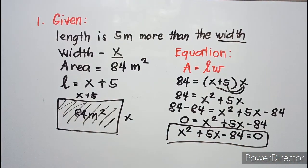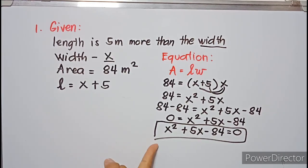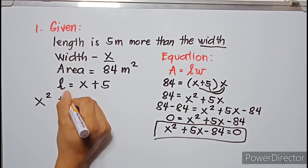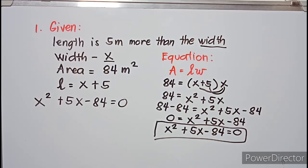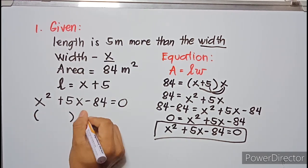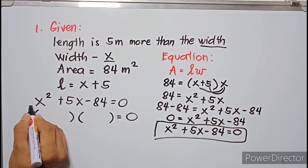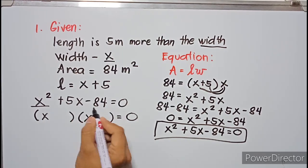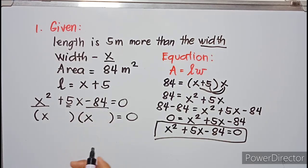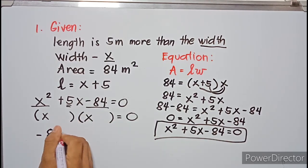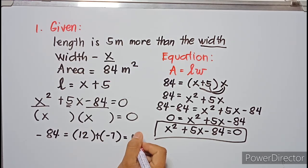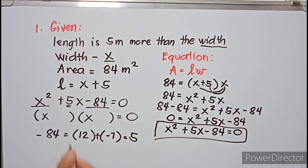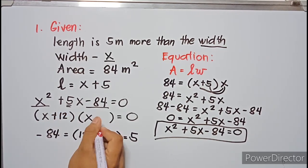From our equation x² + 5x − 84 = 0, we will solve for x using the method of factoring. The factors of x² are x and x. The factors of −84 that give a sum of 5 are 12 and −7, since 12 + (−7) = 5. Therefore our factors are (x + 12) and (x − 7).